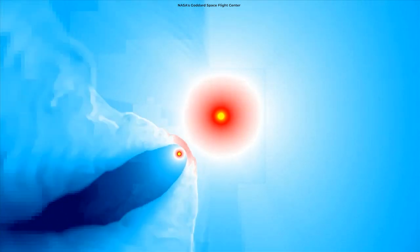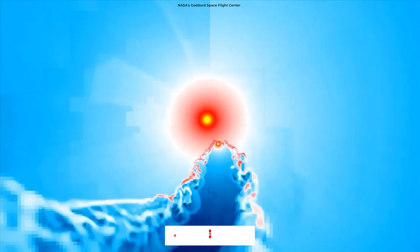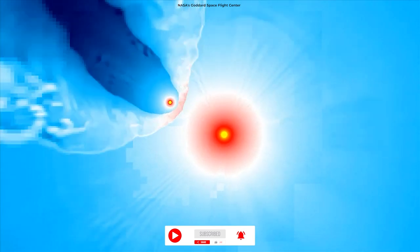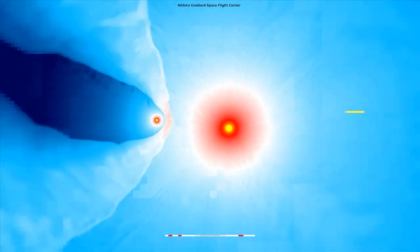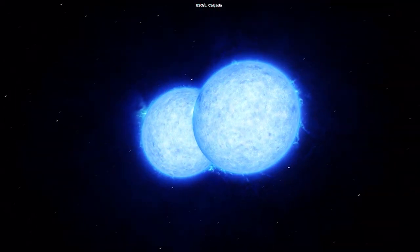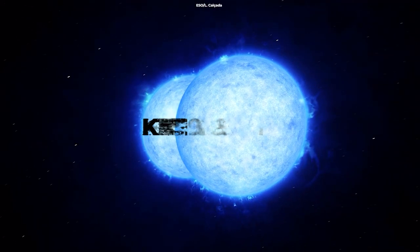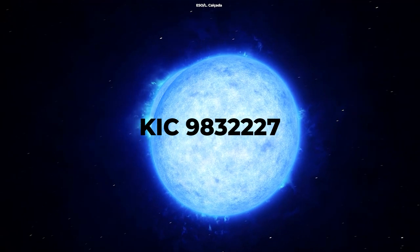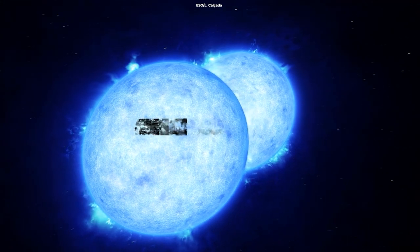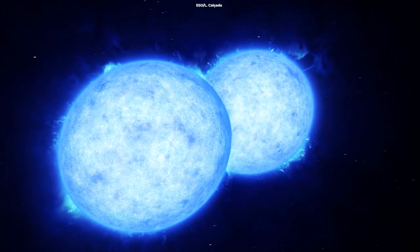Astronomers have discovered a binary star system that is likely to collide and explode, resulting in a stunning explosion in the Earth's sky in 2022. This binary star system is known as KIC 9832227 and is made up of two stars that orbit each other once every 11 hours or so.